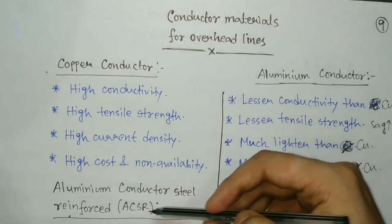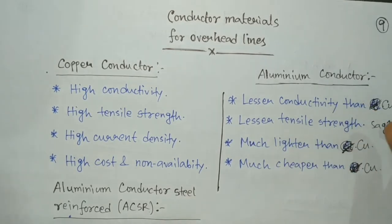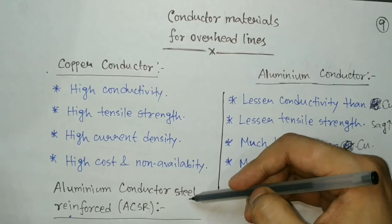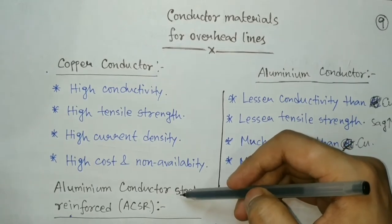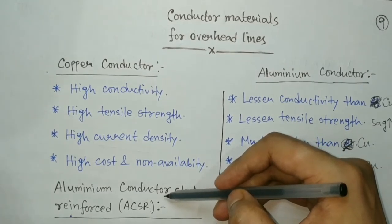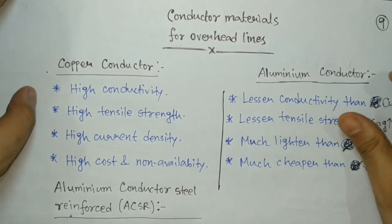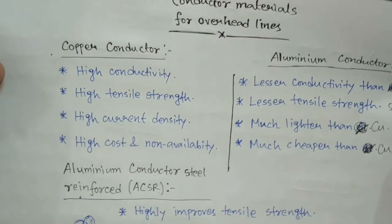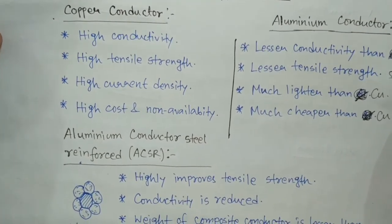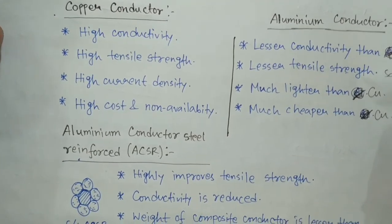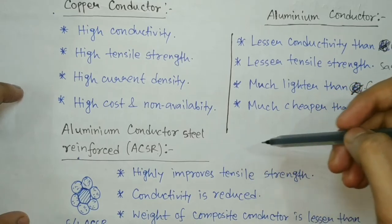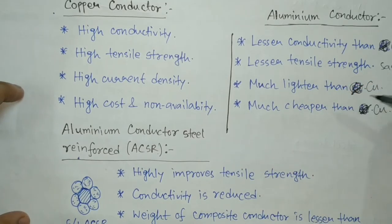To remove this problem, we use the ACSR conductor — aluminium conductor steel reinforced. The conductor material is aluminium, but due to the reinforcement of steel, the tensile strength becomes very good and very high, so the problem of sag can be removed.